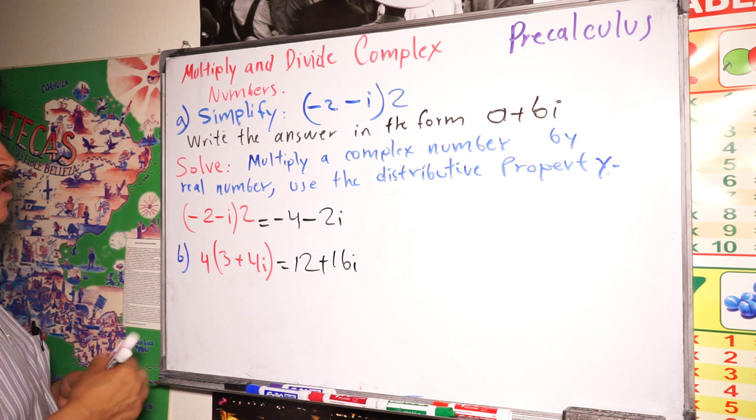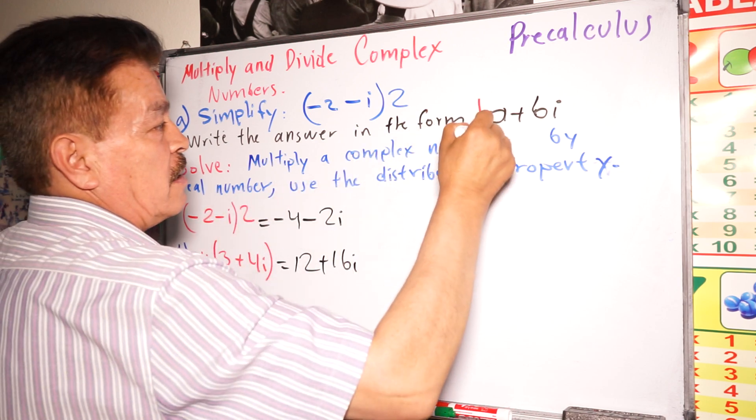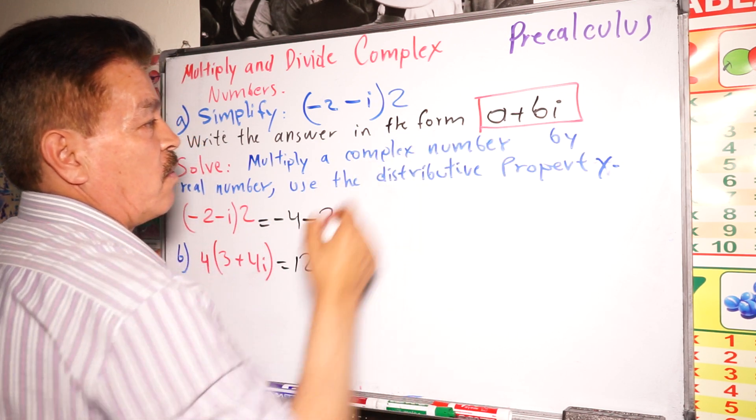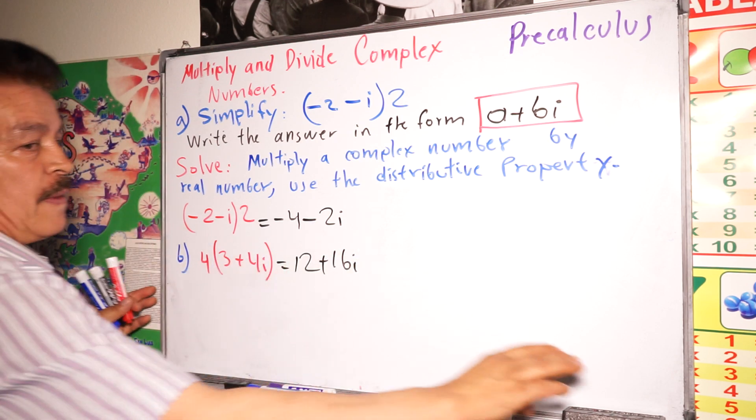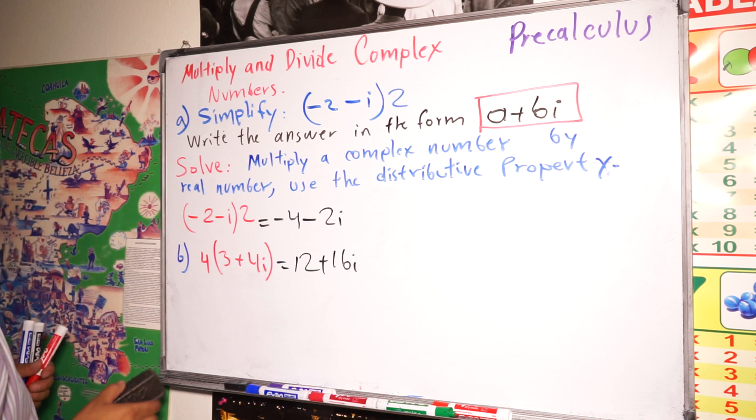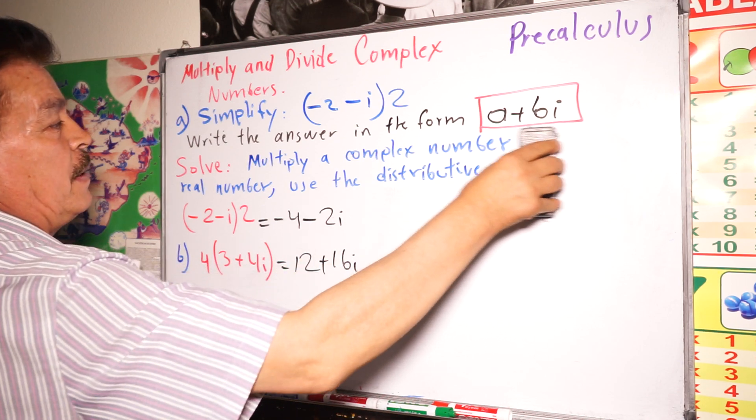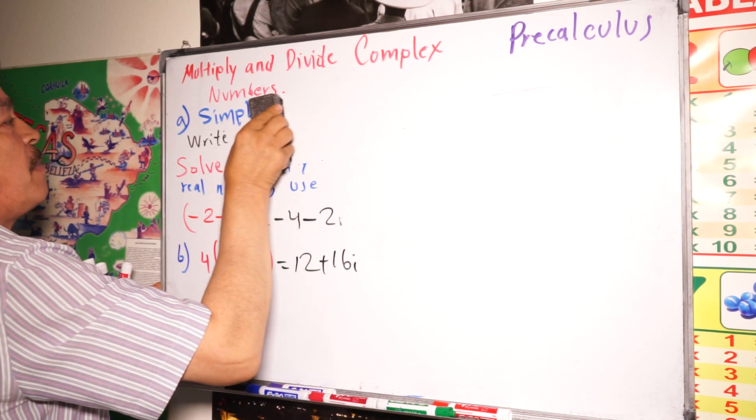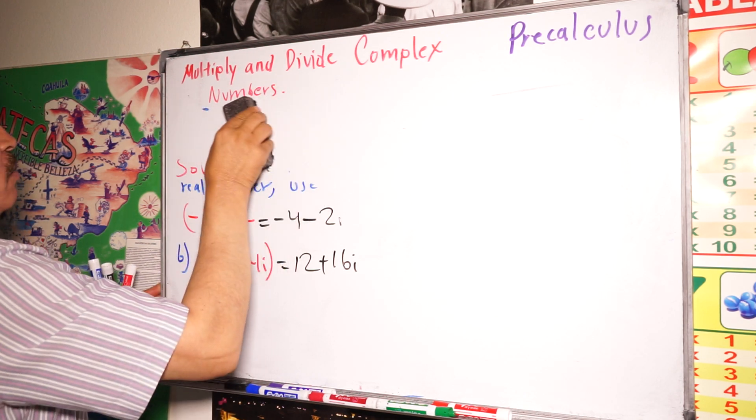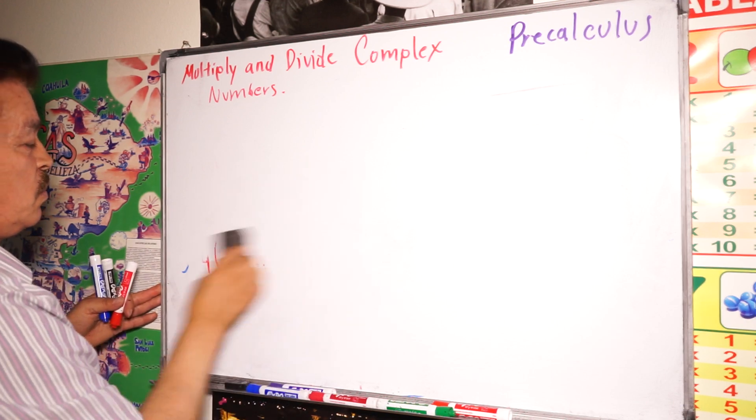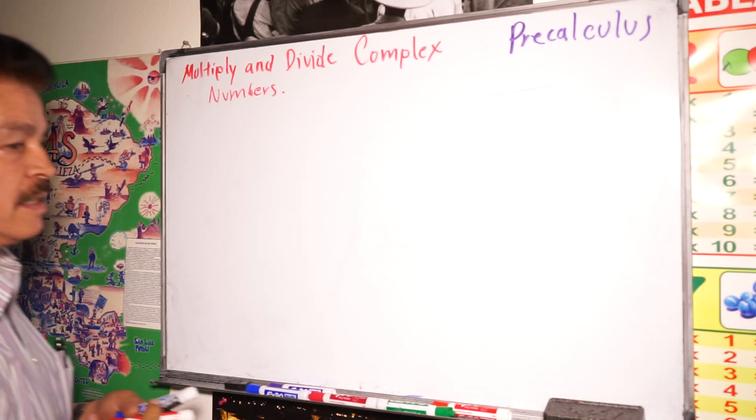Remember, we are looking to write our answer in this form. This is when you multiply. Now, let's divide some complex numbers.